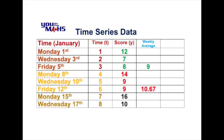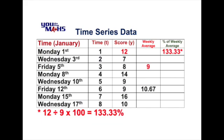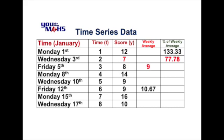Our first calculation is for Monday of week 1: what is 12 as a percentage of the weekly average of 9? That comes to 133.33% to two decimal places. We repeat the process for Wednesday: 7 out of 9 gives 77.78%. The final calculation for week 1 is 8 out of 9, which comes to 88.89%. So we've got percentages of the weekly average for Monday, Wednesday and Friday — telling us that Monday is 133.33% of the average, well above, while Wednesday and Friday are slightly below.